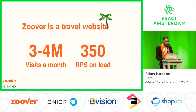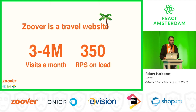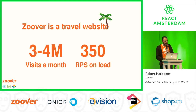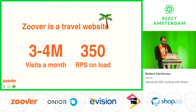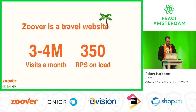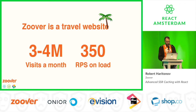To give you a bit more context, Zuber is a travel website mostly aiming at the Dutch market. It's a fairly high-load project with around three to four million visitors a month, especially in high seasons, and around 350 requests per second on higher load — and that will only be growing from now on because we're really ramping up everything in the product.